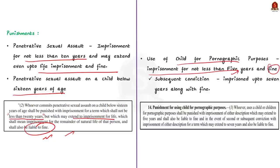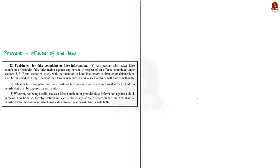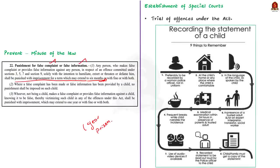If the same offense of child pornography is committed again — that is, upon subsequent conviction — the person may face imprisonment of up to 7 years along with a fine. The Act also has provisions to prevent misuse of the law. The POCSO Act provides punishment for making false complaints or providing false information with malicious intent, usually kept relatively light at 6 months to encourage reporting. But if a false complaint is made against a child, the punishment can be up to 1 year of imprisonment. The Act also provides for establishment of special courts for trial of offenses under the Act.